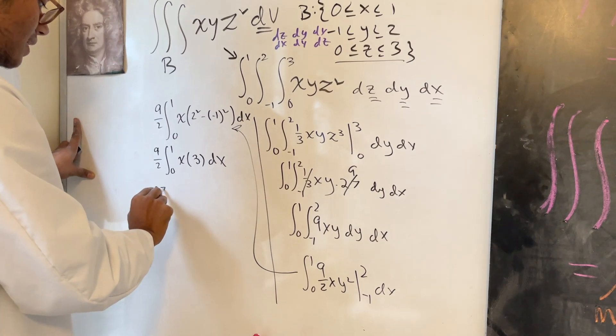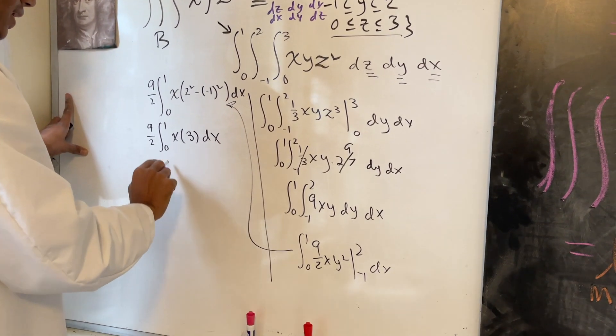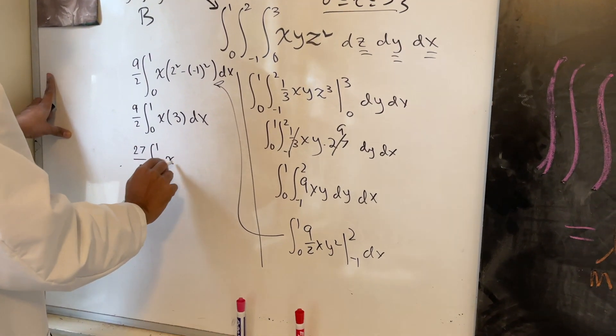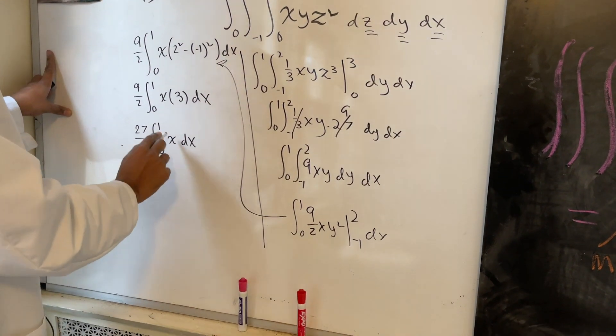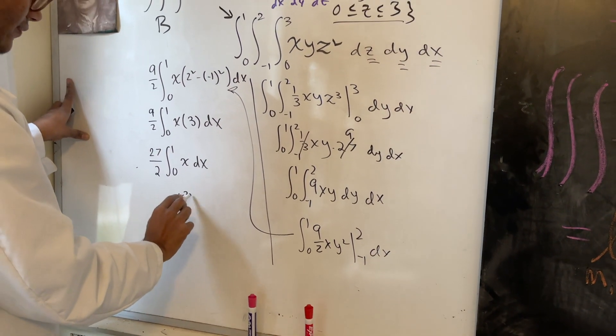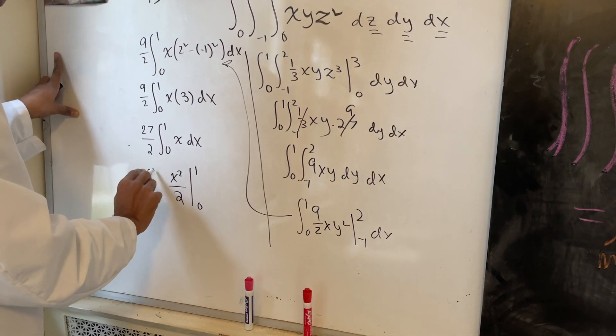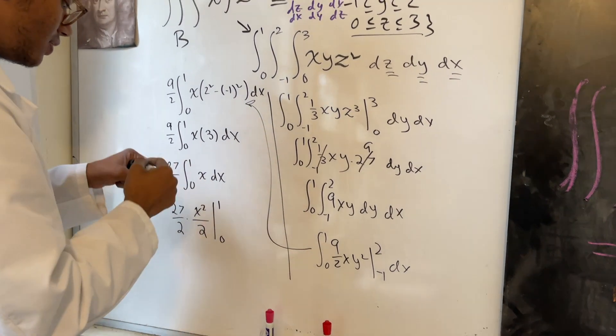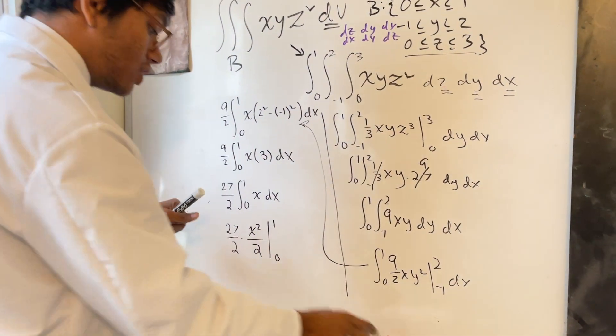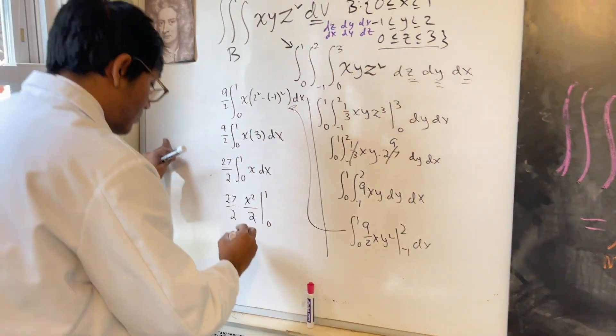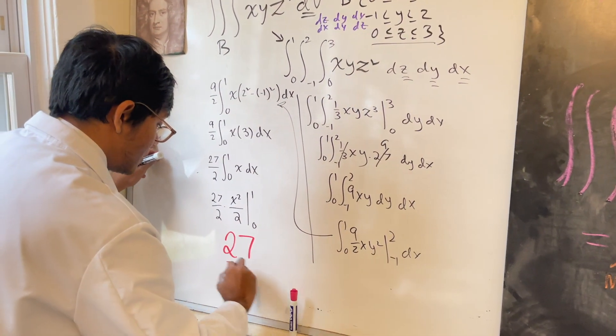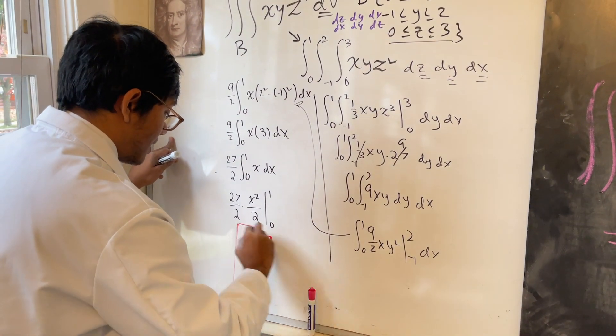Pull the constant out outside. So I have 27/2 times the integral of x from 0 to 1 dx. And so what am I left with? I'm just left with a very simple integration from 0 to 1 of x²/2. Multiply this by 27/2. And so when I substitute in 1 for x, I'm left with my final answer of 27/4. And that, ladies and gentlemen, is it for this episode of Calculus 3.